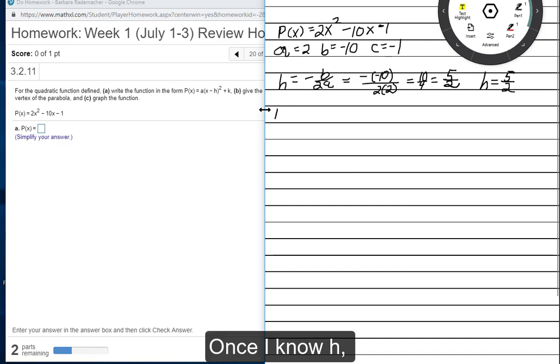Once I know H, I can calculate K. I do that by substituting the H number in for every X in P of X. You can perform this calculation by hand, as I'm doing here, or on your calculator.